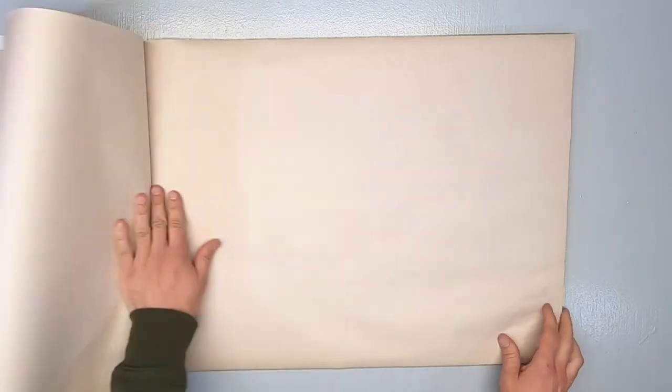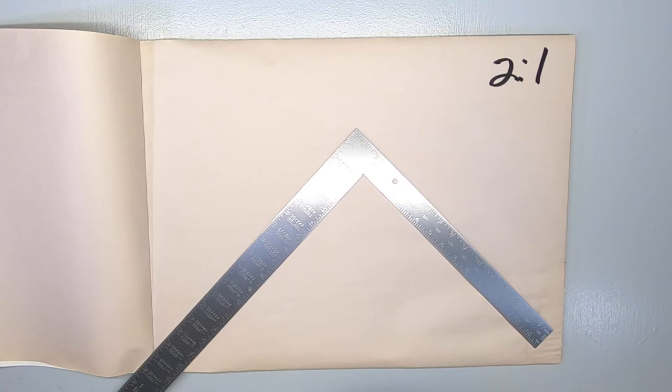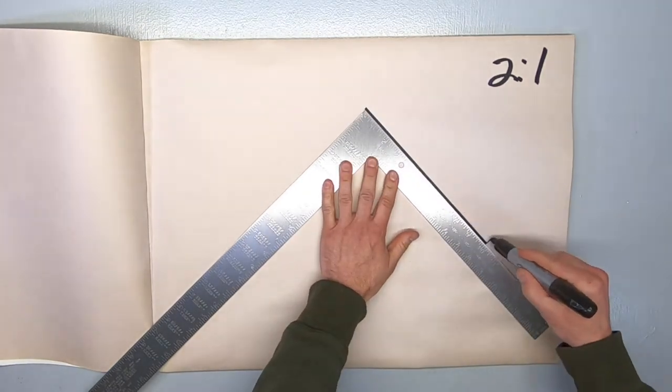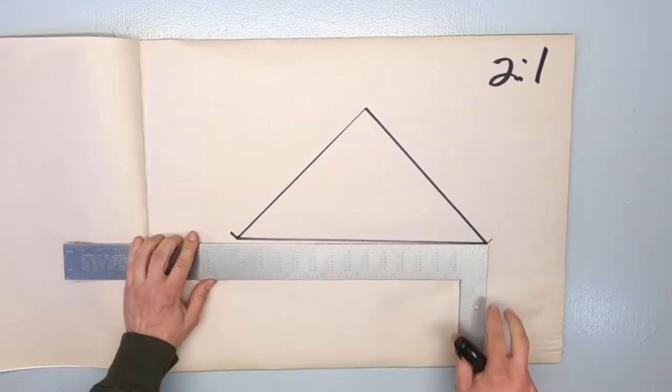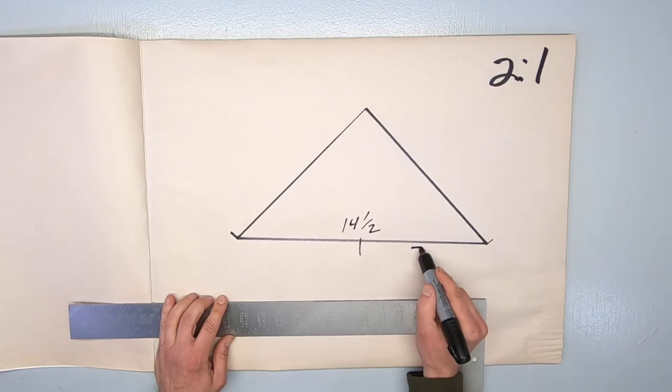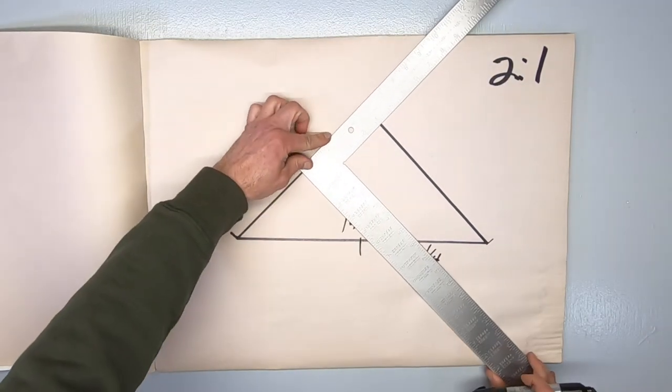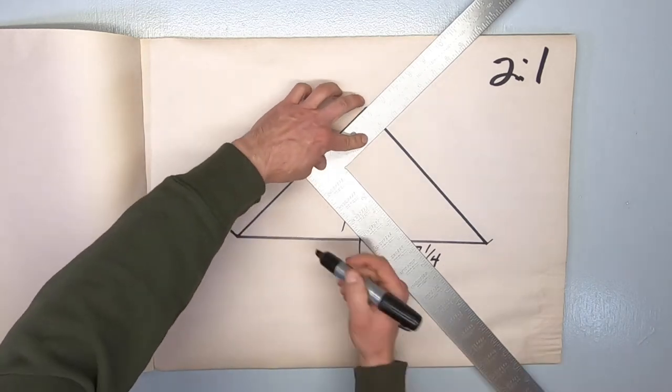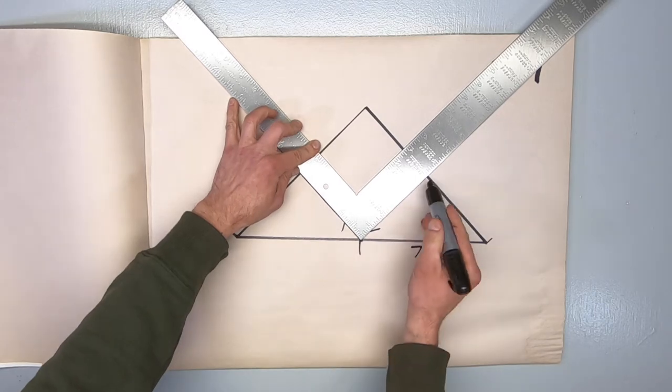Let's say you want to make a pantograph with a two to one ratio, which will make an image twice as big or twice as small. I draw a right angle. This time the hypotenuse is 14 and a half inches long, so put a mark along that line at halfway or seven and a quarter inches. Draw in the two perpendicular lines and you've got your measurements. Now for a two to one pantograph.